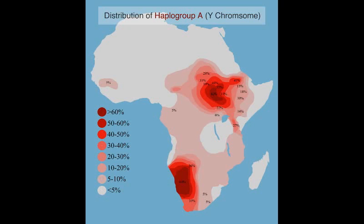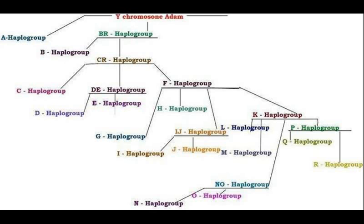Y chromosome Adam — the last male common ancestor of humans — is thought to have lived in West Africa, possibly in Cameroon, about 200,000 years ago. Although people aren't entirely sure on the location, and it might be in Ethiopia as well, the last male common ancestor of humans is definitely in Sub-Saharan Africa.